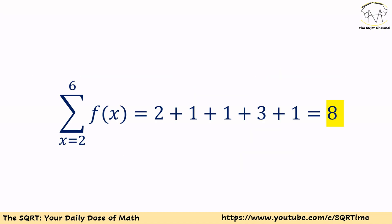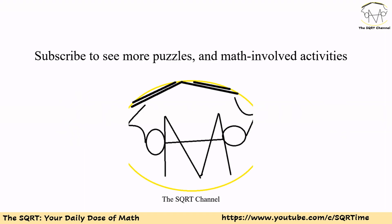At the end, we can say that sigma of f(x) for x equal to 2 through 6 is 2 + 1 + 1 + 3 + 1, which equals 8, and that's our final answer. Thanks for watching the video. If you would like to see more puzzle and math-involved activities, please subscribe to the channel.